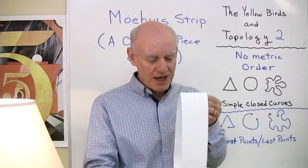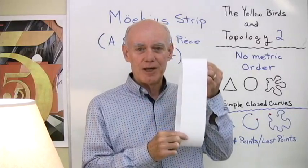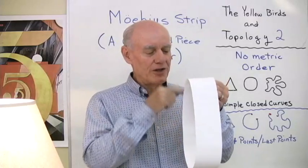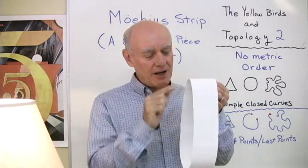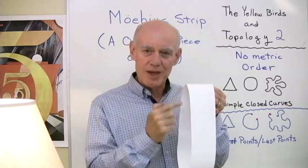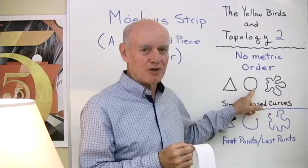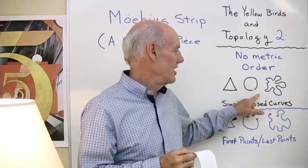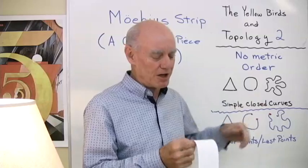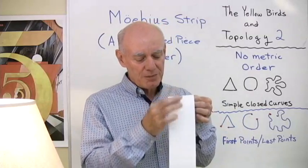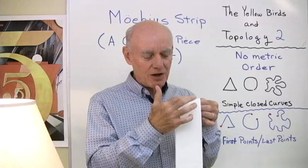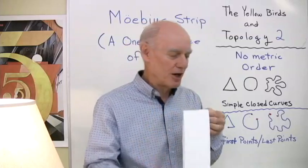So one of the things about a side of this loop right here is that I can write all over this side right here and I can't get to the other side without crossing the edge, similar to my simple closed curve, where I can't go from inside to outside without crossing that boundary. So on this piece of paper I'm going to show you that I can't go from this side to this side without crossing an edge.